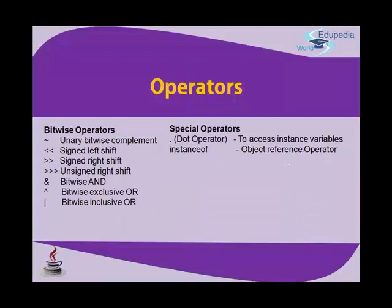Next is the bitwise operator. We have the unary bitwise complement (~), left shift (<<), right shift (>>), and unsigned right shift (>>>). The single ampersand (&) is bitwise AND, the caret (^) is bitwise exclusive OR, and the single pipe (|) is bitwise inclusive OR. Special operators include the dot operator (.) used to access instance variables and methods of an object, and the instanceof operator used to check an object reference.